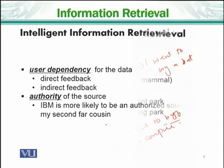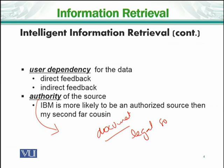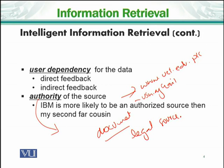An intelligent IR agent must also handle user dependency, meaning that the system needs direct or indirect feedback from the user for the given data. Finally, there is authority. Authority means that if I search a document and it is from a legal, authoritative source, it is more authentic compared to non-authoritative sources. For example, information from www.uet.edu.pk is more authentic and better than information from a personal website like usman.ghani.khan.com. Authority is necessary for an IR system.